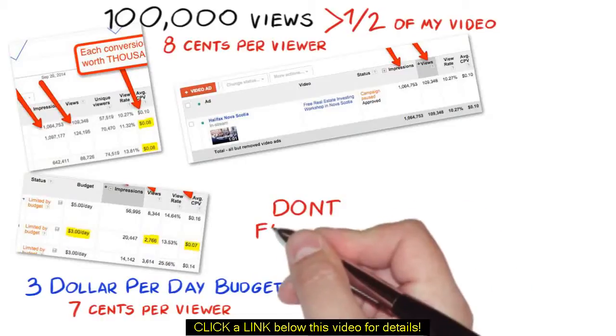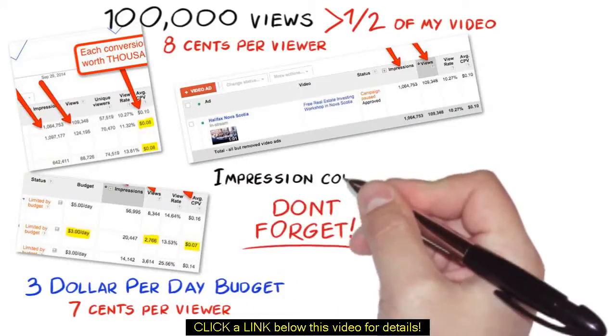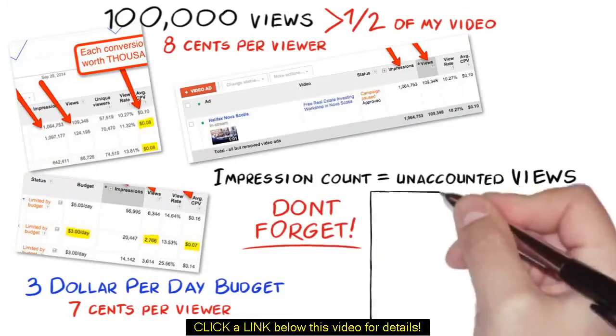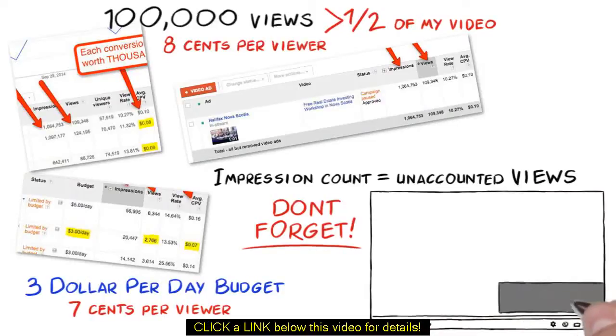Now, let's not forget, impression count is also very important as these are unaccounted views. These are unaccounted views for the first 5 seconds where the user can skip or a little less than half of the video before they can skip the ad. Again, these are forced views which are unaccounted.